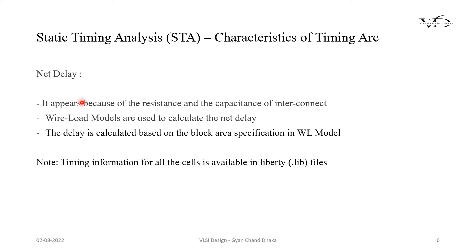Now let's see what is net delay. Net delay occurs because of the resistive and capacitive nature of the interconnect. In the previous chapter, we saw there was a net present between the output of the first AND gate and the input of the second AND gate. There is an associated delay to that net because of the interconnect's resistive and capacitive behavior. To calculate that delay, different models are available in the EDA industry, but the famous one is the wire load model. How the wire load model works and how it is used to calculate net delay will be covered in one of our next videos with a proper example.